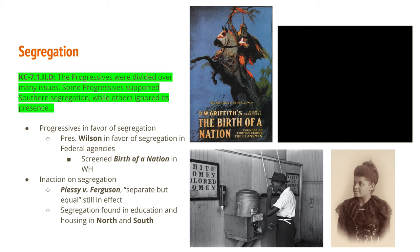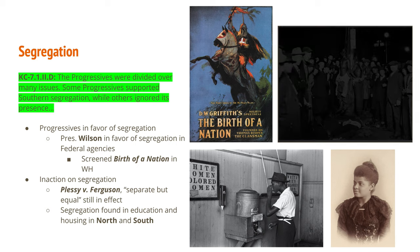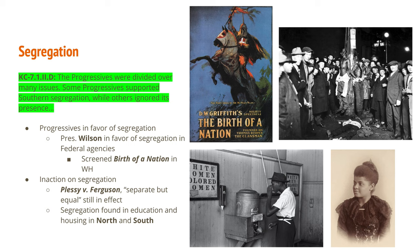Ida B. Wells was still working on the issue of lynching. There is one picture coming up that is quite graphic — that's why it's blacked out — but this is what the lynchings looked like. People would gather around, beat those they were lynching, and then pose with the body. This was all still going on at the same time that the progressive era was happening and all these other reforms were being put in place.